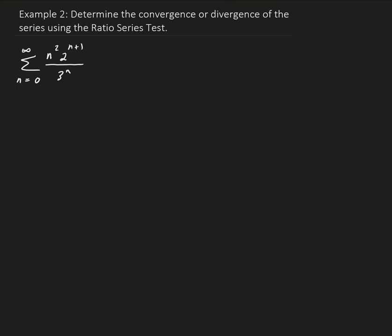So let's go ahead and find the nth term and the (n+1)th term. The nth term is n squared times 2 to the (n+1), all over 3 to the n. The (n+1)th term — we replace n with n+1 — giving us (n+1) squared times 2 to the (n+2), all divided by 3 to the (n+1).